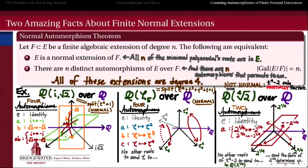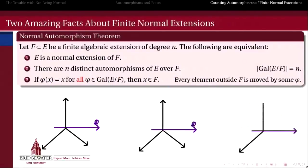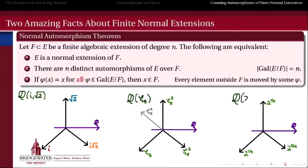The fact that we are missing some automorphisms here is an artifact of the non-normality of this extension, because we don't have all four roots of that polynomial to play with. The second important fact about finite normal extensions is that we can also characterize normality by the fixed field of the Galois group.